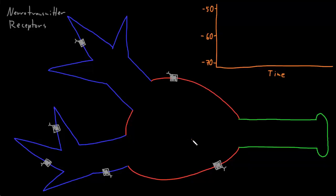In this video, I want to talk about how neuron graded potentials are created and why they decay with both time and distance.